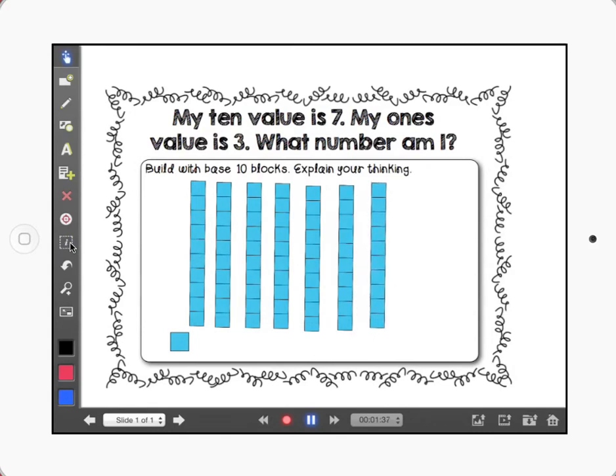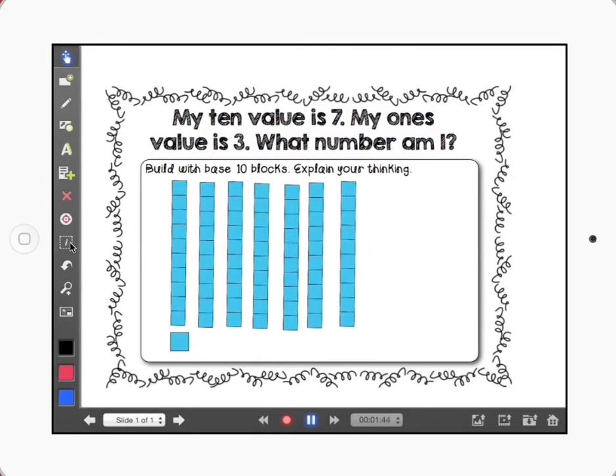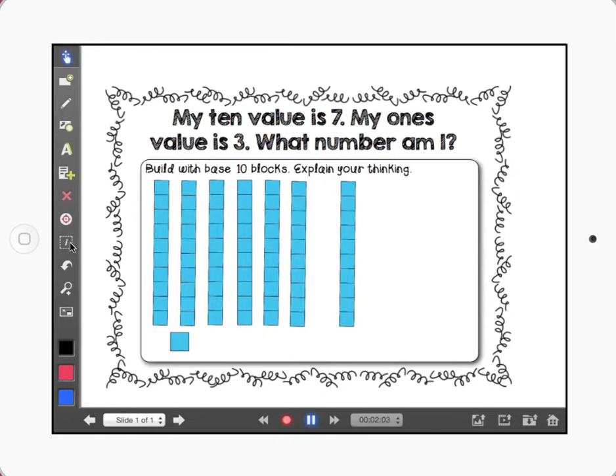So my 10 value is 7. I have 1, 2, 3, 4, 5, 6, 7 tens. But that doesn't mean that I have 7. I have 7 tens. What number is that? Well, let's count. 10, 20, 30, 40, 50, 60, and 70.